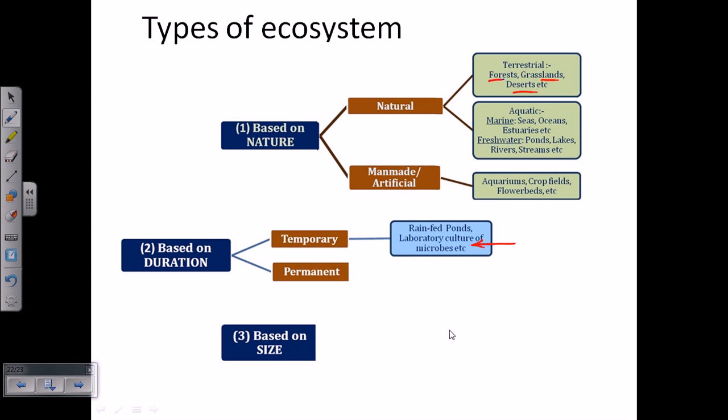If you look here, the permanent ecosystem example is forests, lakes, all these terrestrial and aquatic. These things are permanent ecosystems because they're natural, they're permanent. Most of the natural ecosystems are permanent.